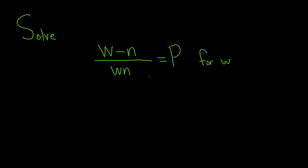In this problem, we have to solve this equation for W. We have W minus N being divided by WN, and it's equal to P. Let's go ahead and work through it. So we're looking for W, but the problem is that the W is on the bottom here, so we need to get rid of that. A good first step is to clear the fractions by multiplying both sides by WN.